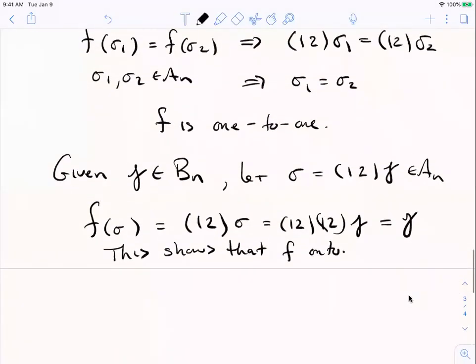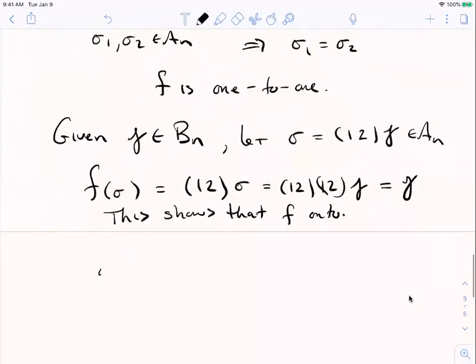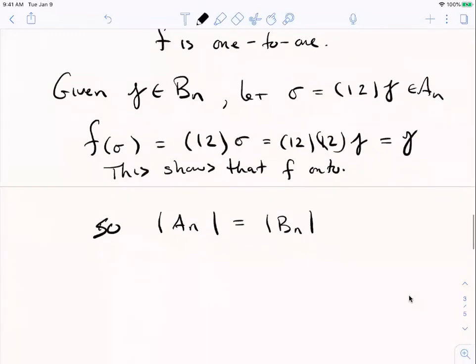And since F is onto, it's a bijection. So we have established our claim that these two sets are equal. And since they union together to give all of S n with no overlap, it follows that half of the elements are in fact even. So the alternating group is a subgroup of index two. It's a subgroup.